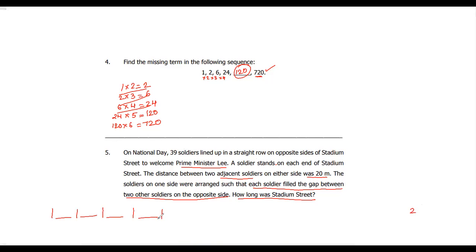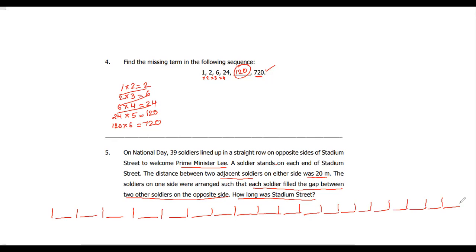On one side there are 20 soldiers numbered 1 through 20, and on the other side there are 19 soldiers filling the gaps in between. So 20 plus 19 equals 39 total soldiers. The prime minister walks in between them as a mark of respect. Now we have to find how long Stadium Street was.